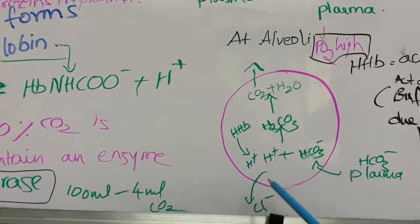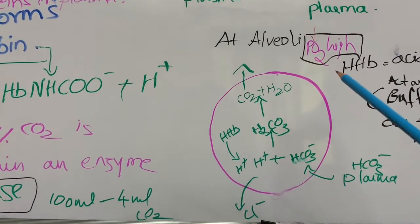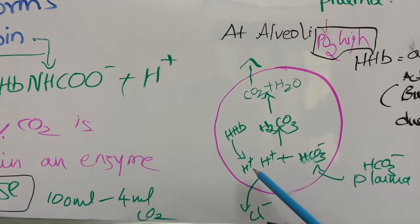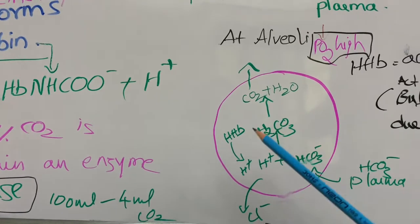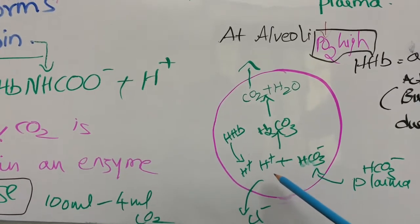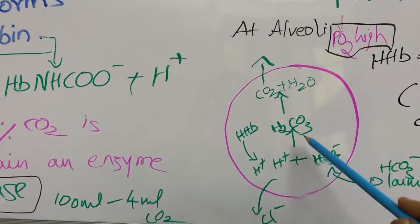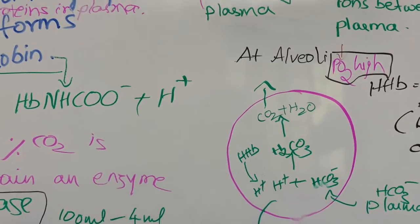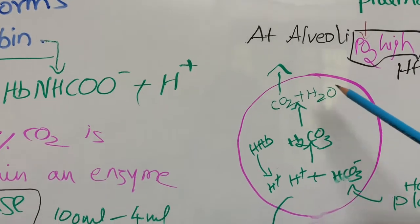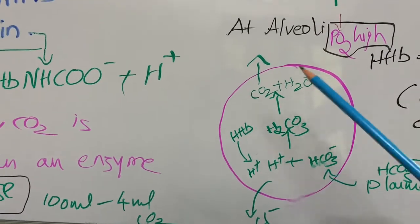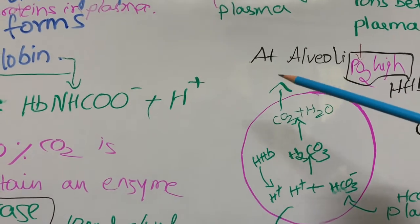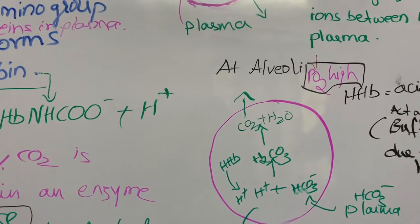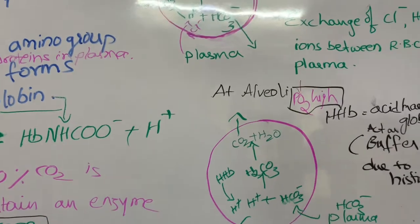Since bicarbonate is an anion, it moves back inside the RBC, while chloride ions come out of the RBC. Also, because the partial pressure of oxygen is very high, acid hemoglobin liberates H⁺ ions and combines with oxygen to form oxyhemoglobin. The liberated H⁺ ions combine with bicarbonate ions and form carbonic acid, which then dissociates into CO₂ and H₂O.